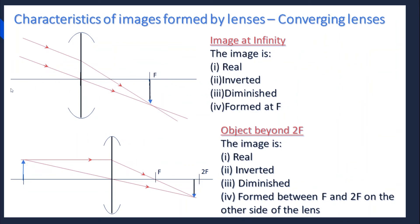The first image formed is by rays from infinity. Rays from infinity come in as parallel lines. Once they strike the lens, one ray passes through the optical center undeviated, and the second ray is refracted through the principal focus. Where the rays meet is the position of the image. In this case, the image is formed at the principal focus f. It is real, inverted, diminished, and formed at f.